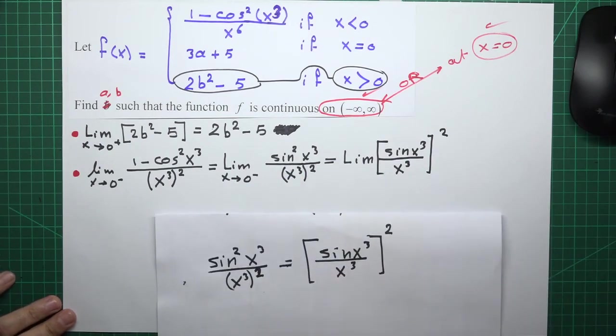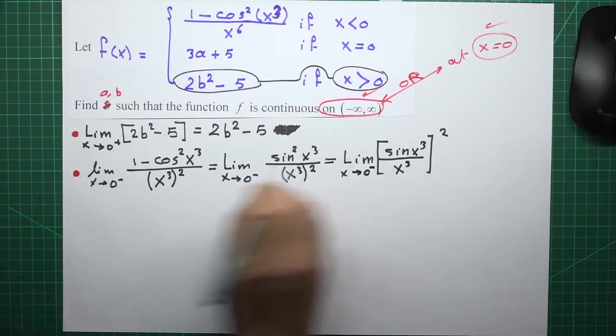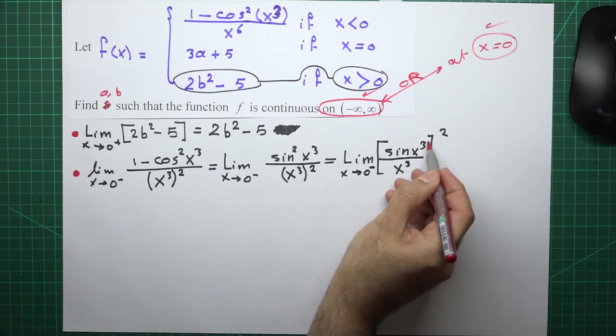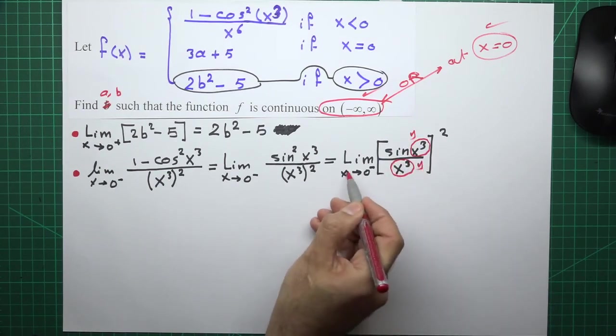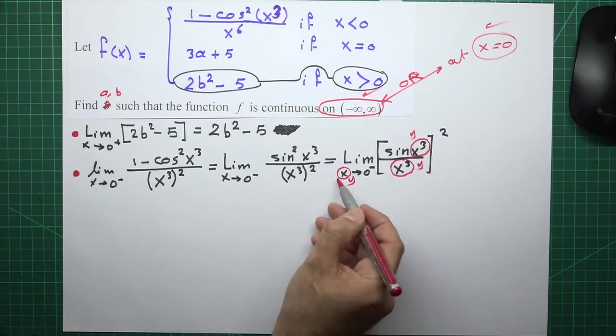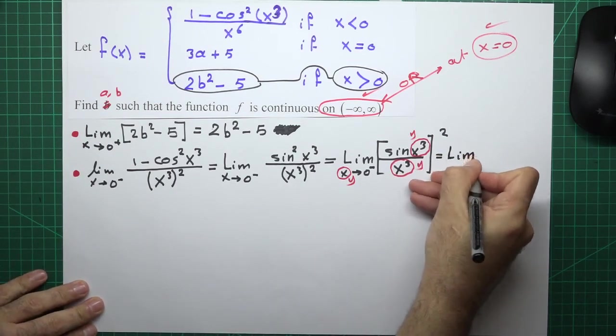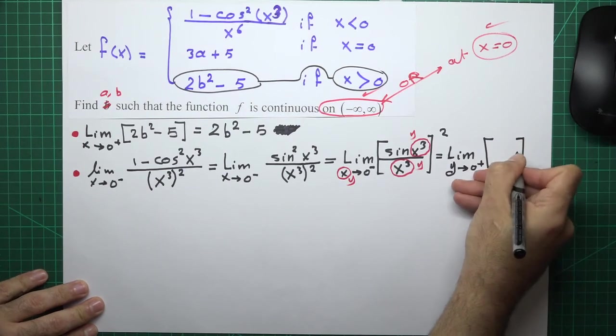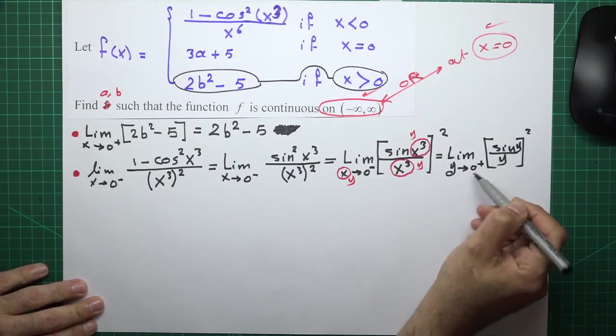All to the power of 2, so I do not forget that x goes to zero from left. But x goes to zero from left, y goes to zero from left as well. In here, limit as y goes to zero from left of sine y over y all squared. Sign y over y as y goes to zero is 1, one squared is 1.